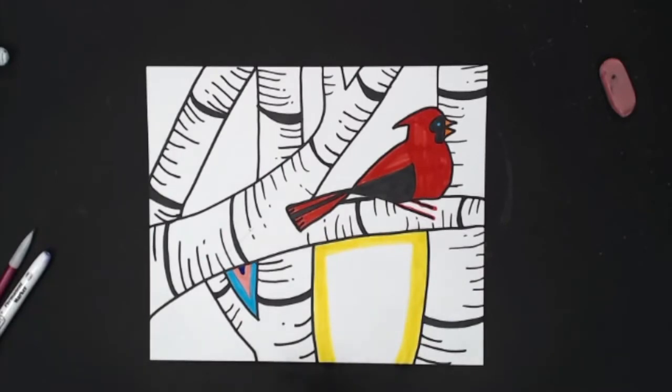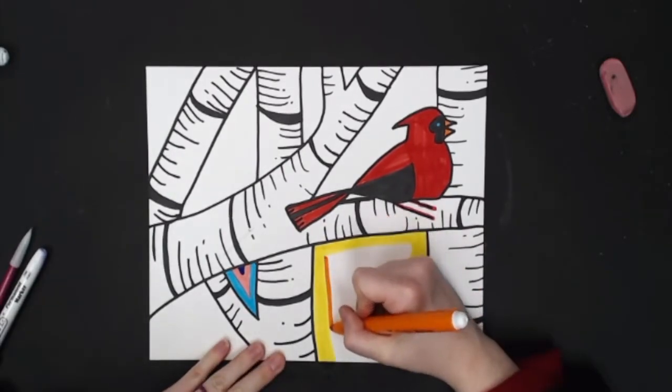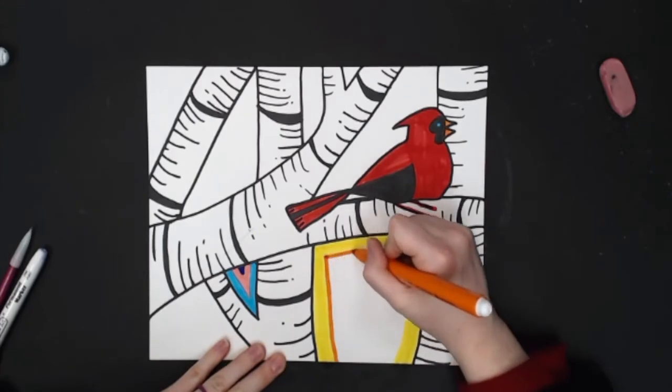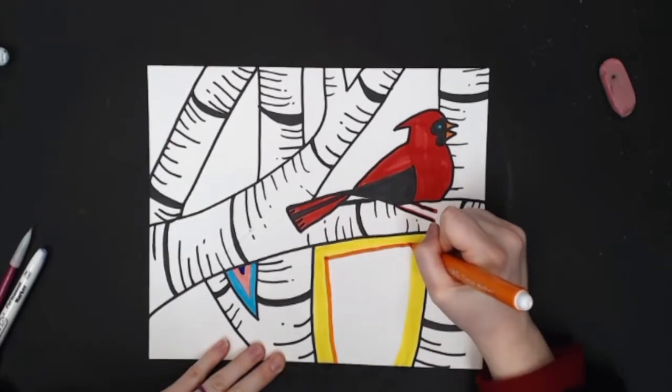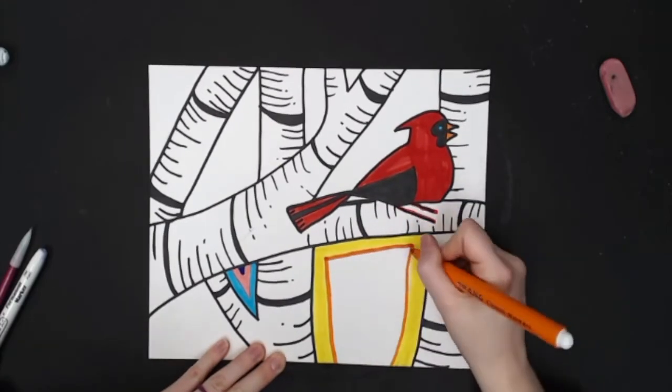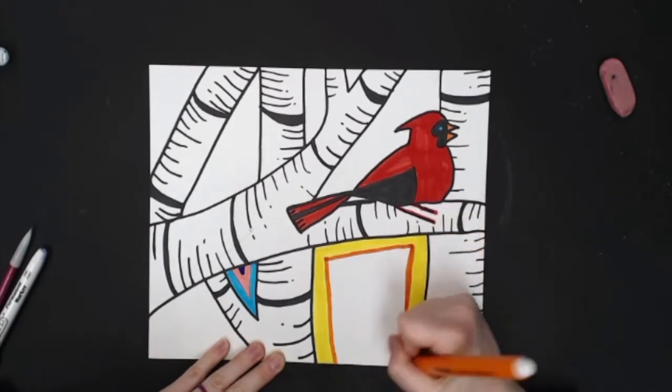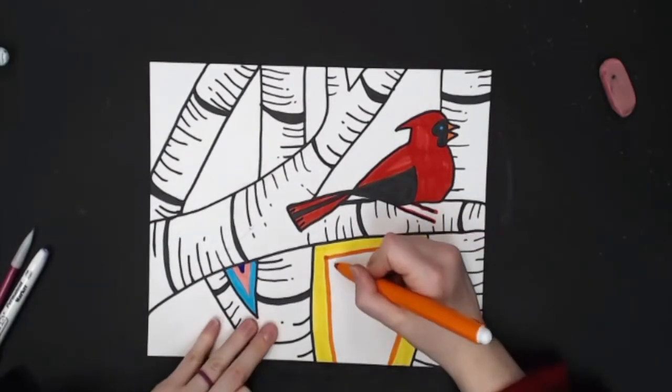I'm going to take my next color. Outline it. And then I'm going to draw where I need to fill in.